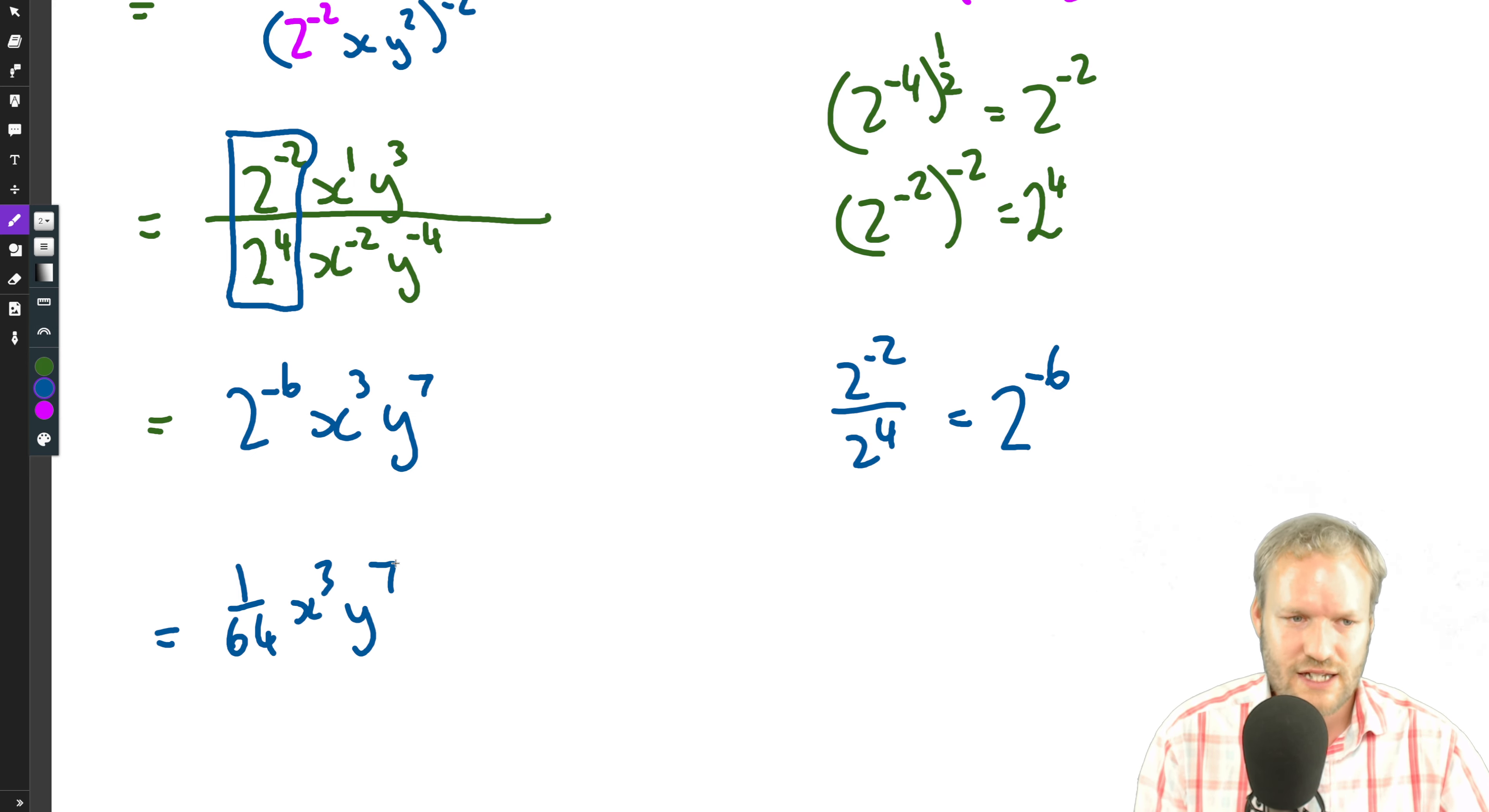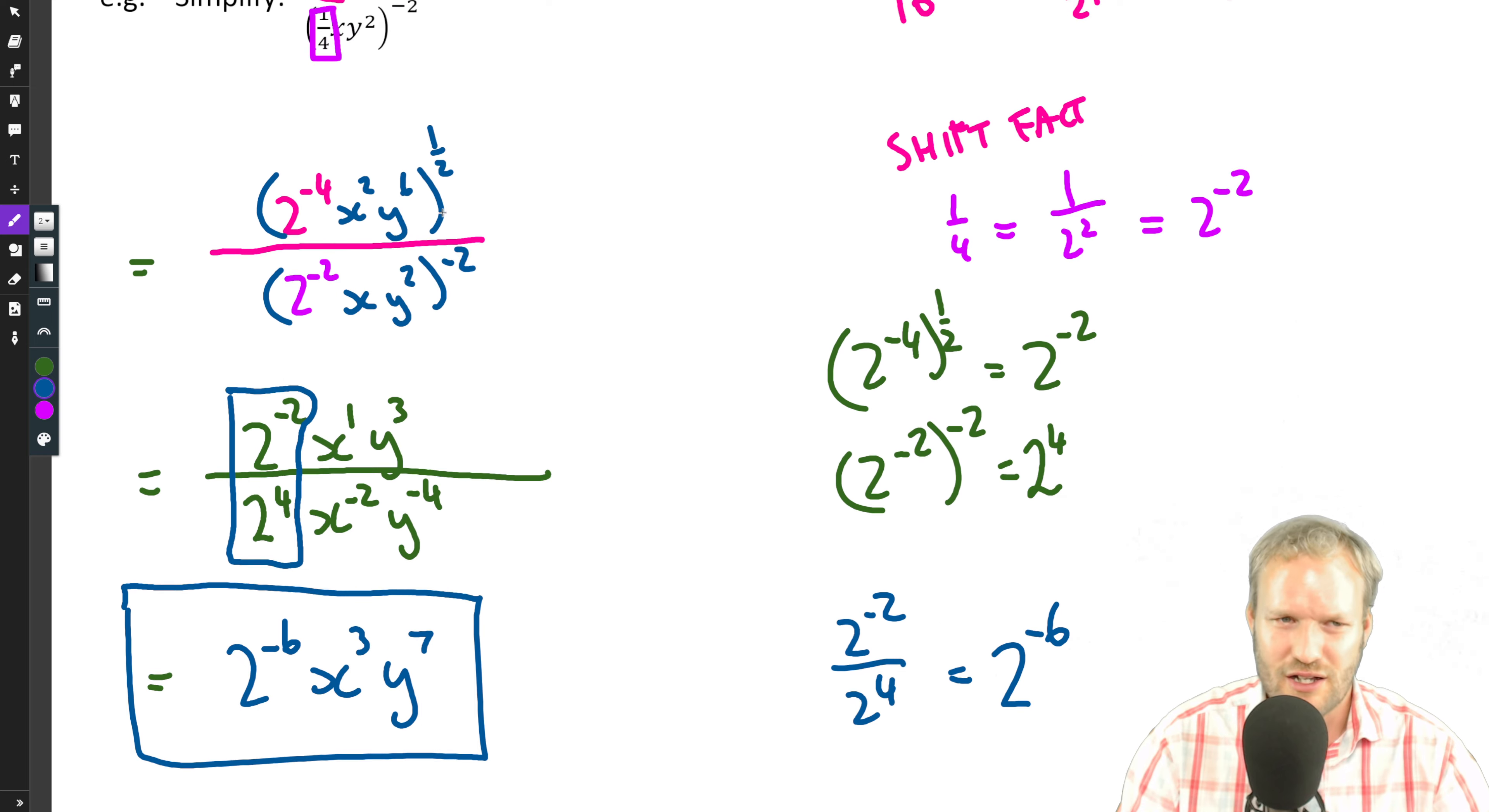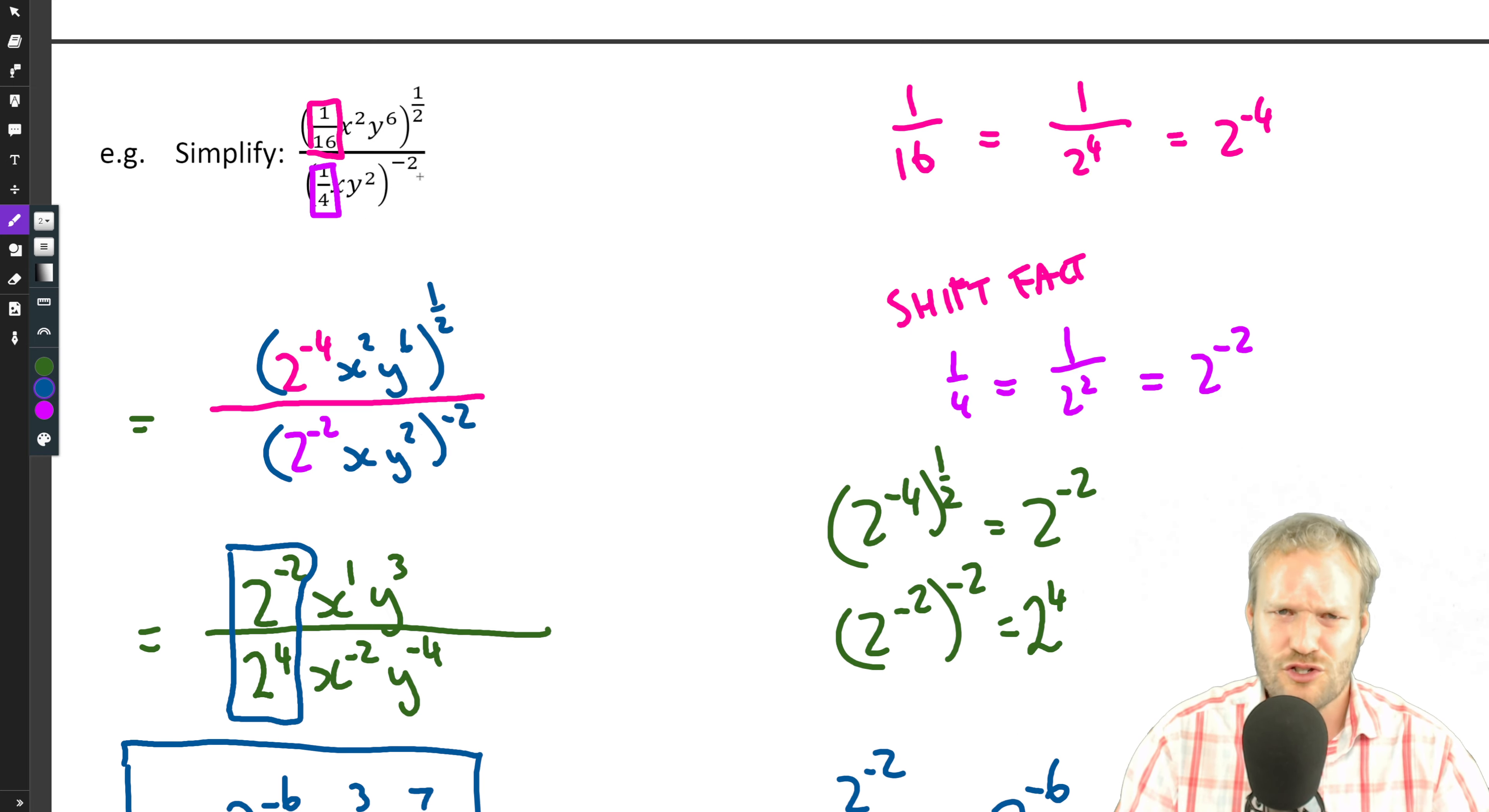And we could think of this as one over 64 x cubed y to the seven. But this is a perfectly good way to leave it, and we managed to simplify this without blindly punching things into our calculator and going, oh, a quarter to the negative two, and having very little understanding of what that is.